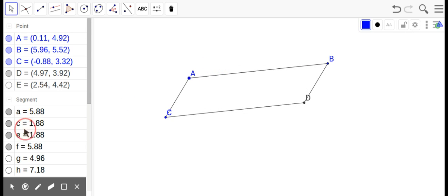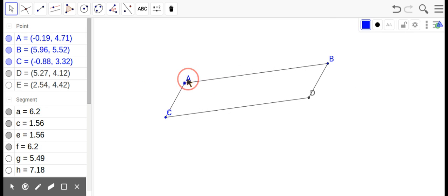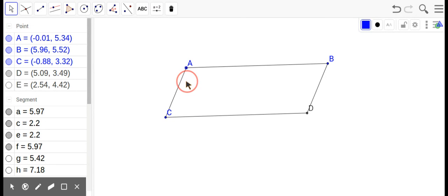No matter what I do, look at these four numbers right here. They always stay congruent. So, if I can make something with some congruent sides, two sets of congruent sides, we got it. If I make something with two sets of parallel sides, we got a parallelogram.